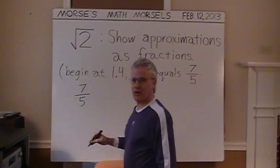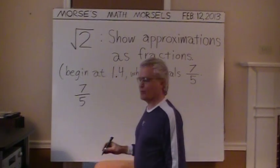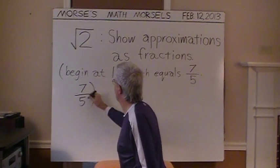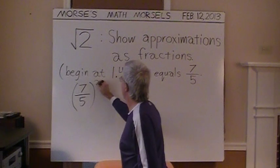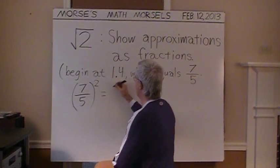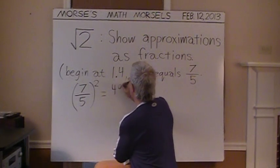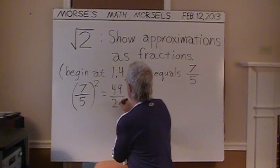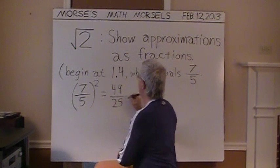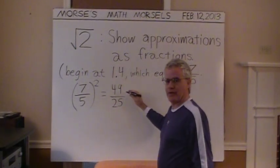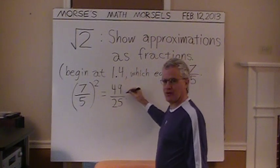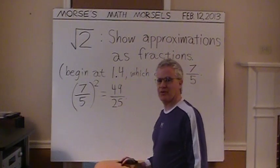Let's see how close that is to 2 if we square that, the whole thing in parenthesis. 7 squared is 49, 5 squared is 25. We have 49 twenty-fifths, which is pretty close to 2, just a little under 2.